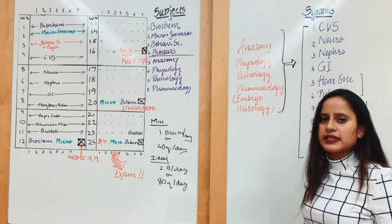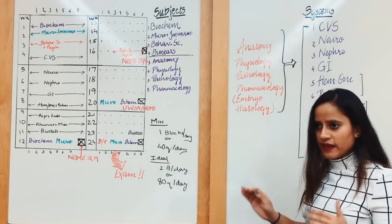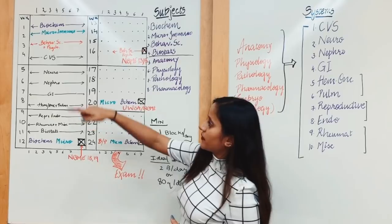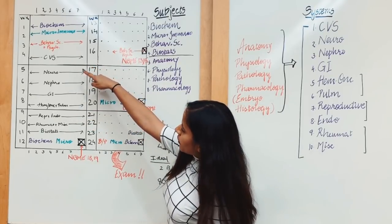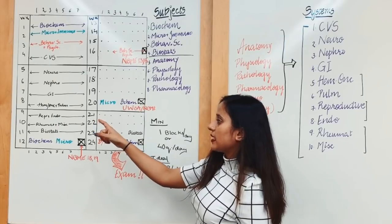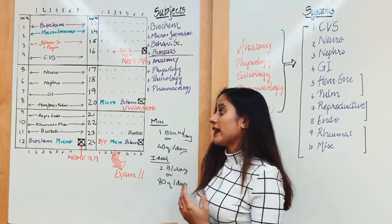I would say CVS, neuro, nephro, and GI are the biggest punch. They have a lot to read in terms of pathology and pharmacology as well, so they deserve clearly one week each. Hence there is a week of CVS, a week of neuro, a week of nephro, and a week of GI.